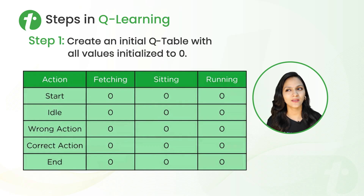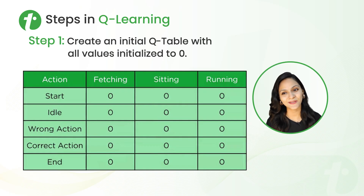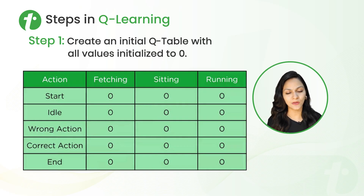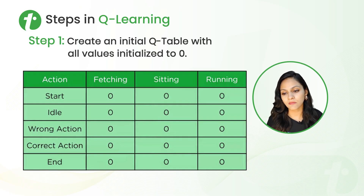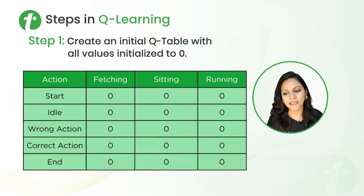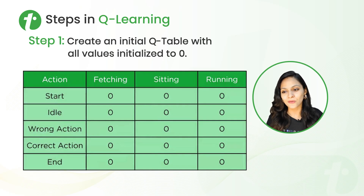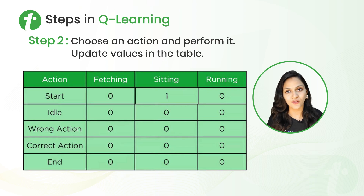Here we are taking the example of a dog — fetch, run, or sit. The first step is to create an initial Q-table in which we initialize all the values to 0. We have actions like fetching, sitting, running, and states like start, idle, wrong action, correct action, and end. Next, we choose an action and perform it, then update the values in the table.